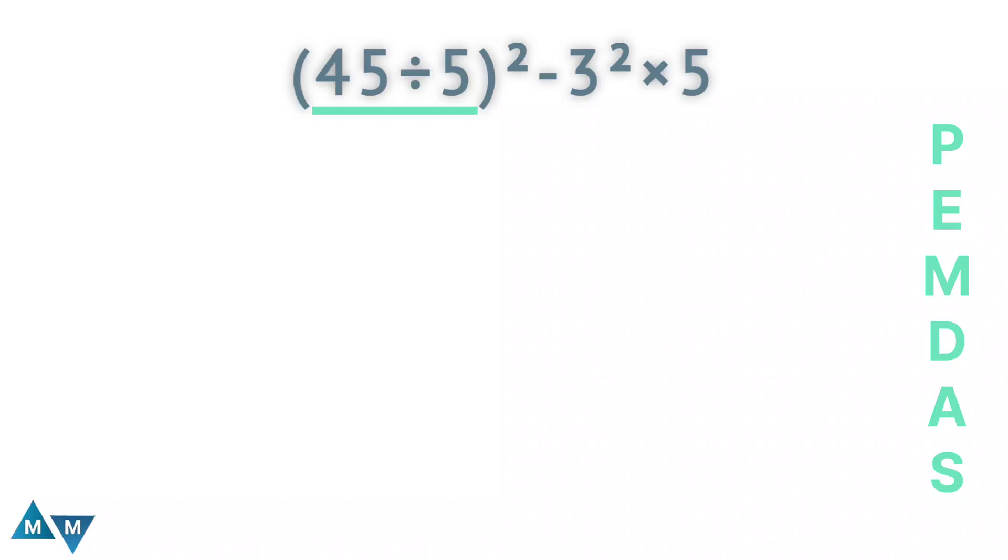OK, so the first thing we're going to do is parentheses. We're going to simplify everything in the parentheses first. So we look inside the parentheses, and we have a division sign. So 45 divided by 5 will be our first move, which equals 9.